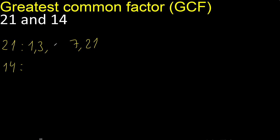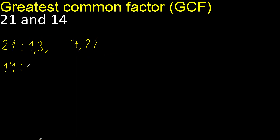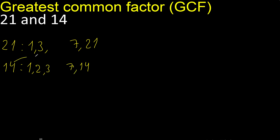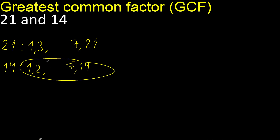Next, 7 is here. Factors here always start with 1. 14 divided by 1 is 14. Next, divided by 2 is 7. Next, cannot be divided by 3, cannot be divided by 4, 5, or 6. Next, 7 is here. Factors.